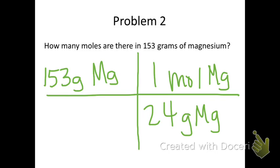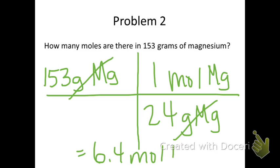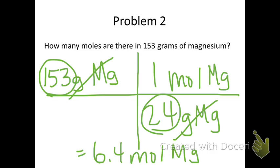Calculate your answer and include units and significant figures. Pause the video and then resume to check your answer. You should have gotten 6.4 moles of magnesium. You will need 2 sig figs since there are 3 sig figs in 153 and only 2 sig figs in 24.